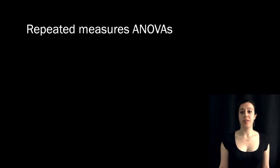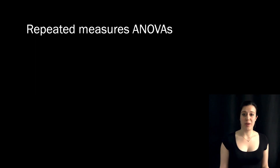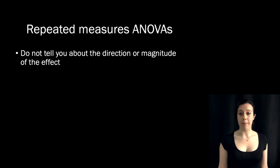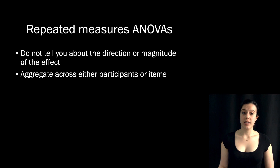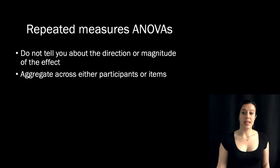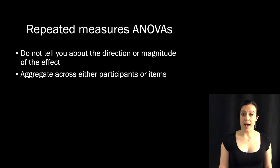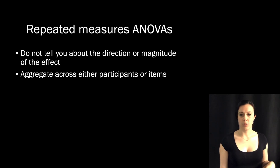Now, repeated measures ANOVAs can take some of these dependencies into account, but they don't tell you about the magnitude or the direction of the effect. And that's one benefit of regression over ANOVAs generally — regression gives you information not just about the overall model fit, but also about the magnitude and direction of the relationships among the variables. Another benefit of mixed effects models over ANOVAs is that if you have multiple grouping factors in your experiment — like participants giving multiple responses and items responded to multiple times — repeated measures ANOVAs aggregate across one of those, so they can't simultaneously model participant and item level effects.